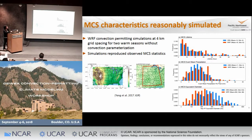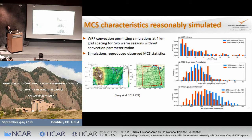This is an example from a study we published last year, where we used the WRF model configured over the continental United States at four kilometers, and used radar data to evaluate our simulation. We look at different characteristics of MCSs in terms of lifetime, intensity of precipitation, and size. Comparing observation in blue with our model simulation in red for two warm seasons, we can see that the model generally captures these properties of MCSs relatively well.